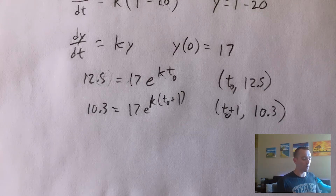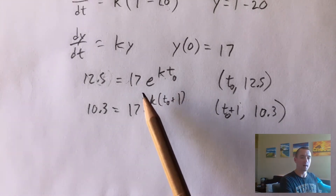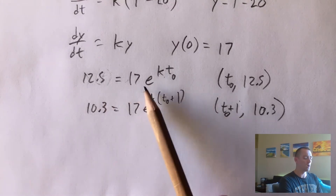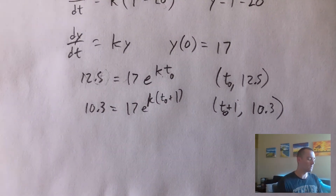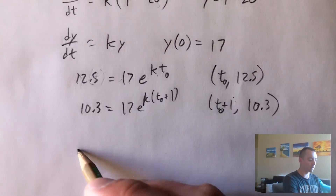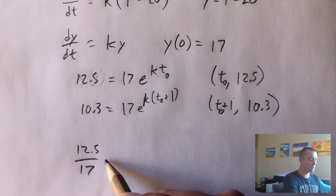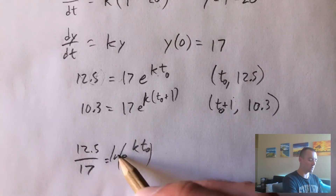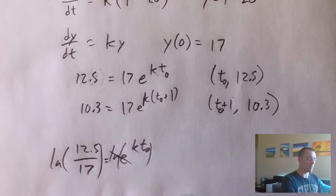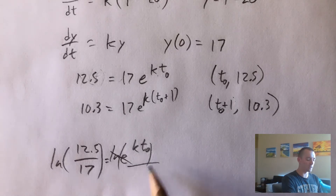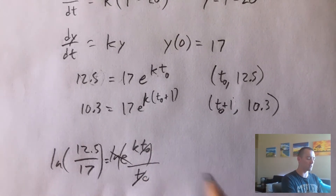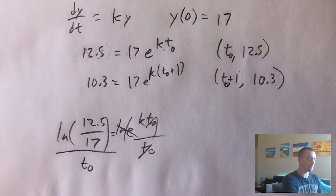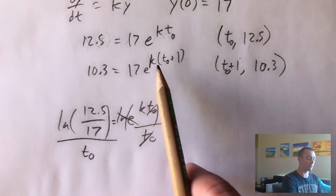To solve for T0, we take the first equation and isolate K. Divide both sides by 17: 12.5/17 equals e^(K·T0). Take the natural log of both sides to cancel the e: ln(12.5/17) equals K·T0. Then divide both sides by T0, giving us K equals ln(12.5/17) divided by T0.